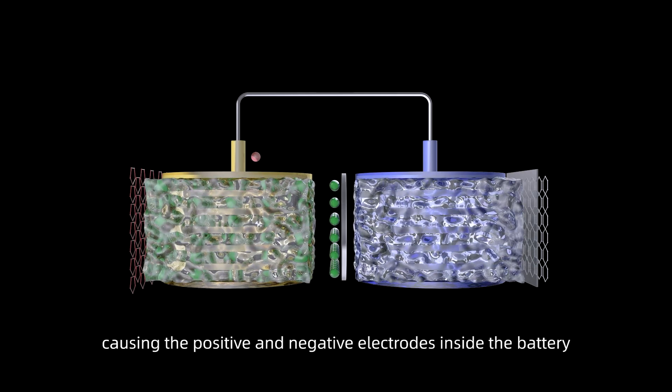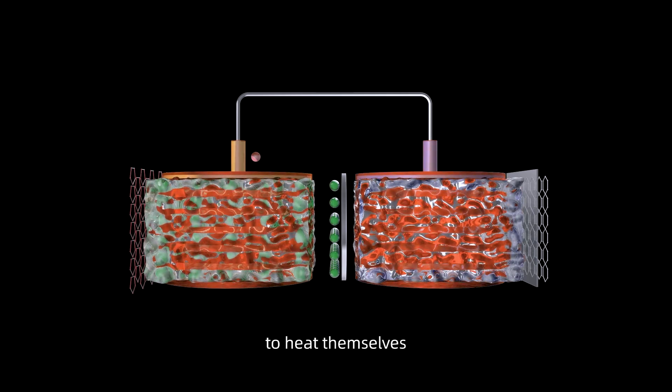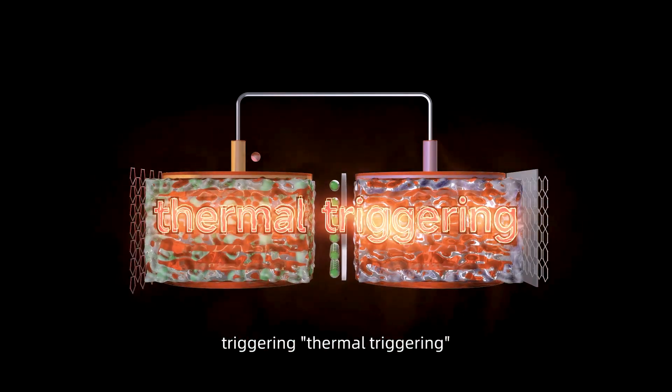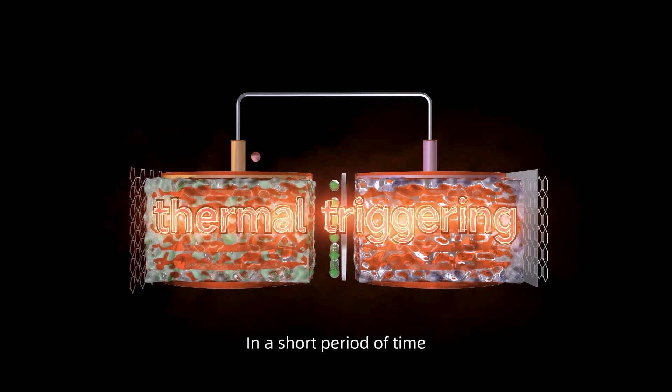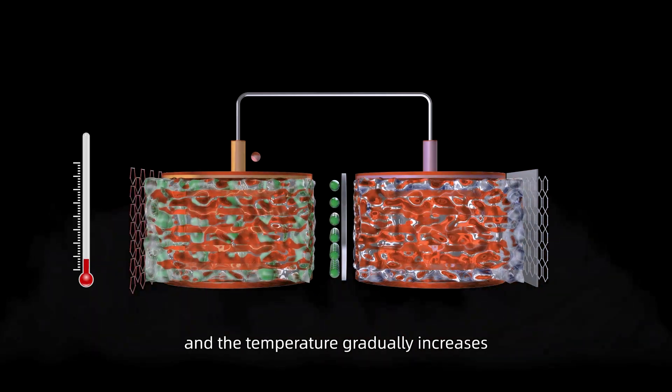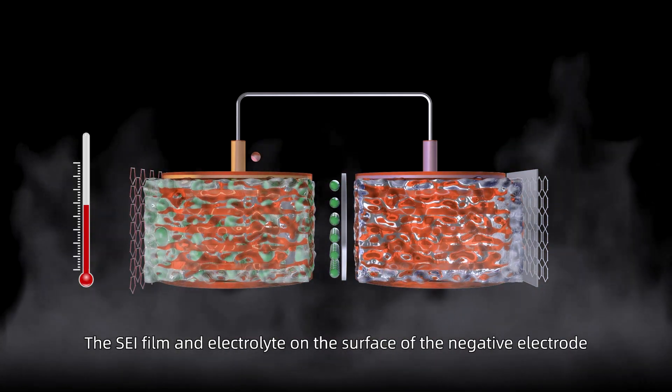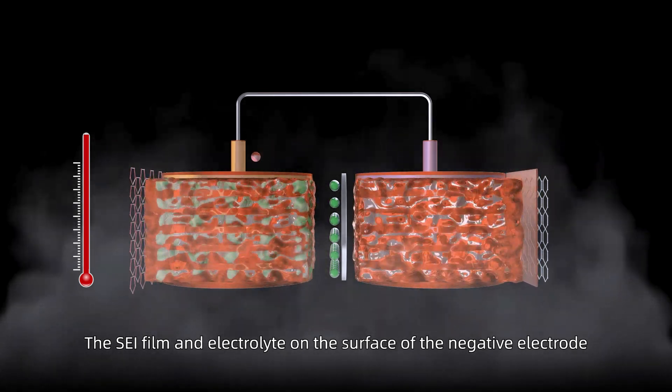This causes the positive and negative electrodes inside the battery to heat themselves or directly short circuit, triggering thermal runaway. In a short period of time, the heat cannot diffuse and temperature gradually increases.